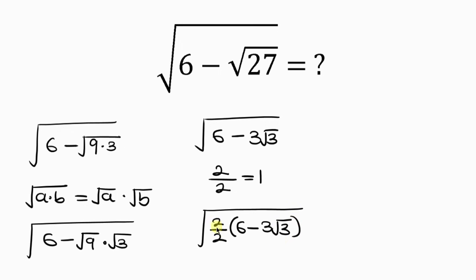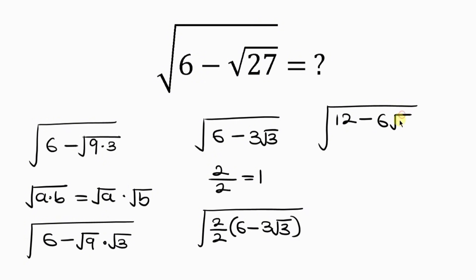We see that 2 divided by 2 is 1, and when it multiplies 6 minus 3 root 3 we have the same thing. Our next step will be for us to multiply the numerator. So we have the square root of: the numerator 2 times 6 is 12, minus 2 times 3 root 3, which is 6 root 3, all over the denominator 2.